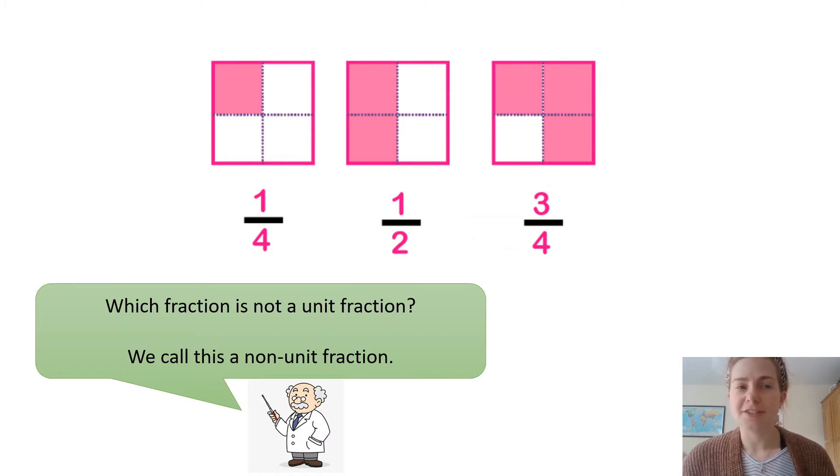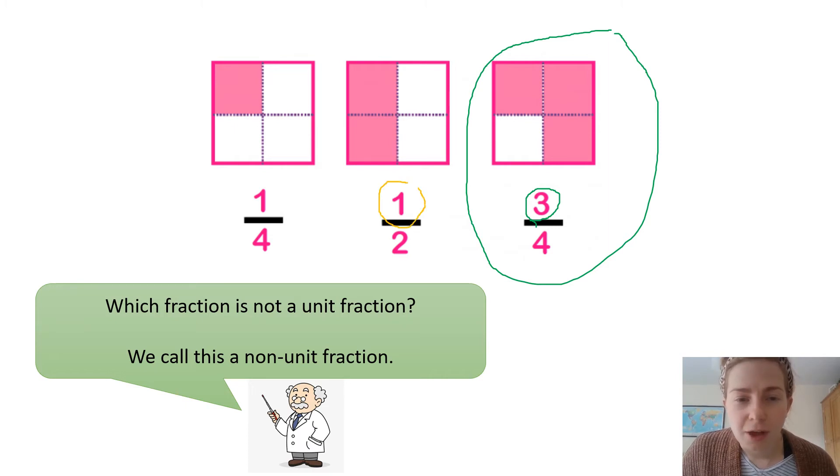Now, the unit fraction just has one as the numerator. Maybe you can think of what a non-unit fraction would have as a numerator. Super, a non-unit fraction has any other number except one. So, one quarter is a unit fraction. Two quarters, three quarters, four quarters would be non-unit fractions. So, you might have recognised the non-unit fraction here is the three quarters, because it has three as its numerator.